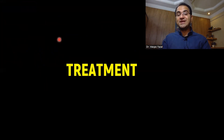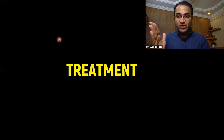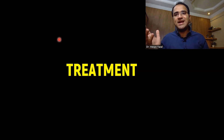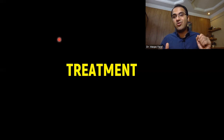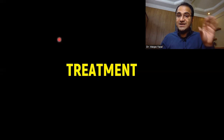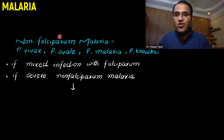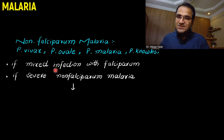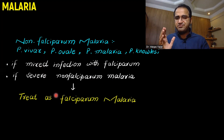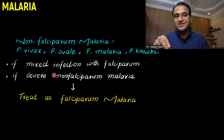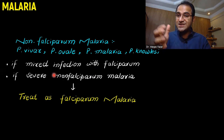In the treatment of malaria, we divide it into two categories: treatment of non-falciparum malaria and treatment of falciparum malaria. Non-falciparum malaria is sensitive to common antimalarial drugs, while falciparum malaria is resistant to commonly used drugs. If the patient has non-falciparum malaria mixed with falciparum, or has severe non-falciparum malaria, you should treat it with the stronger antimalarial drugs used for falciparum malaria.